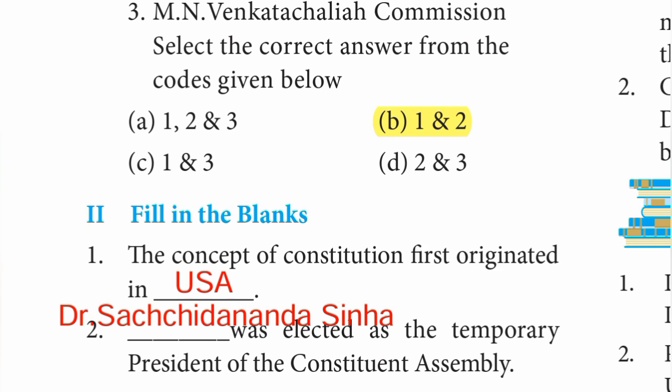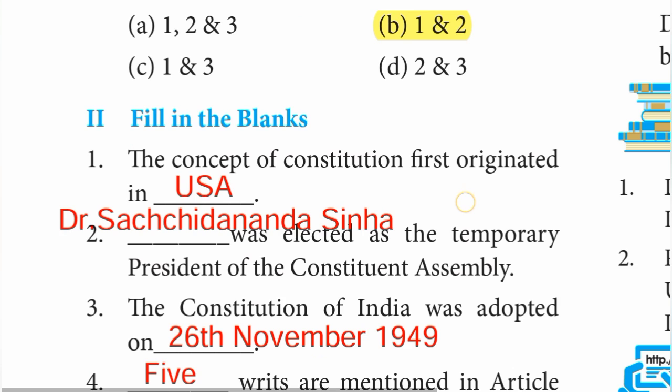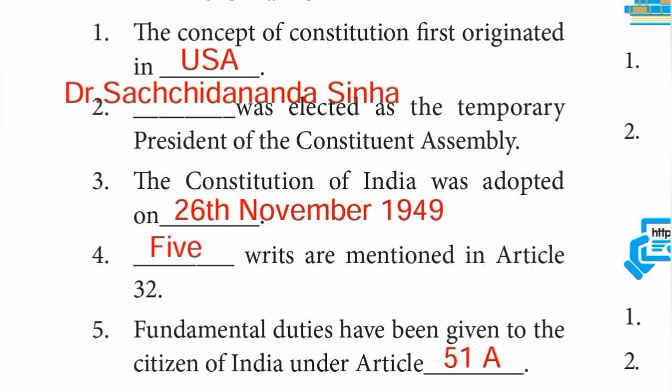Moving to Roman number two — fill in the blanks. First: the concept of constitution first originated in USA — United States of America. Second: Dr. Satchidananda Sinha was elected as the temporary president of the Constituent Assembly. Third: the Constitution of India was adopted on 26th November 1949. Fourth: five rights are mentioned in Article 32. Fifth: fundamental duties have been given to the citizens of India under Article 51A.